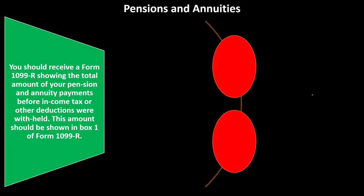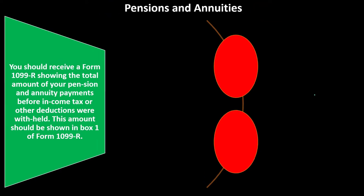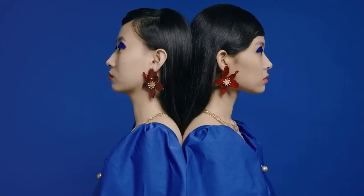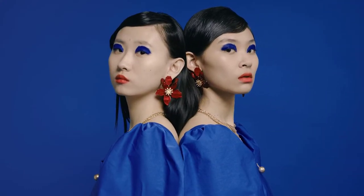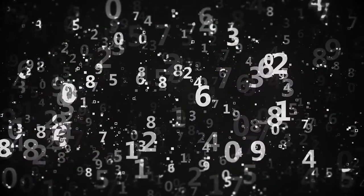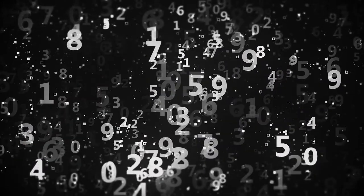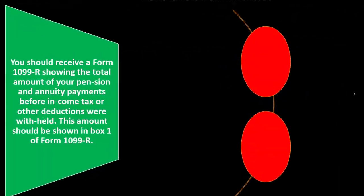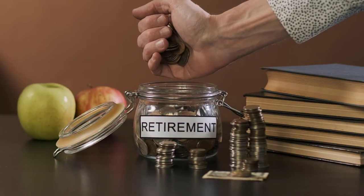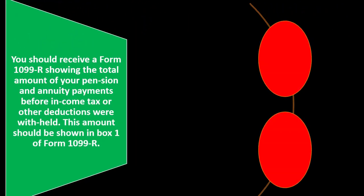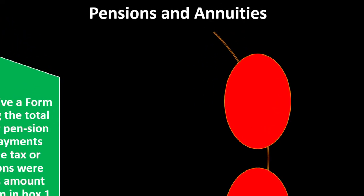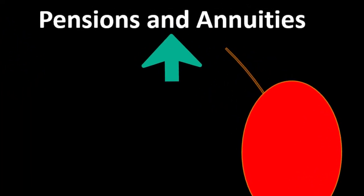We're thinking about the form that would be reporting these items — similar to what we saw with IRAs — which is going to be the 1099-R. You have a similar kind of situation in that you would expect these types of distributions to be taking place more in the later years of a taxpayer's life. So it really depends on the age range that you're talking about.